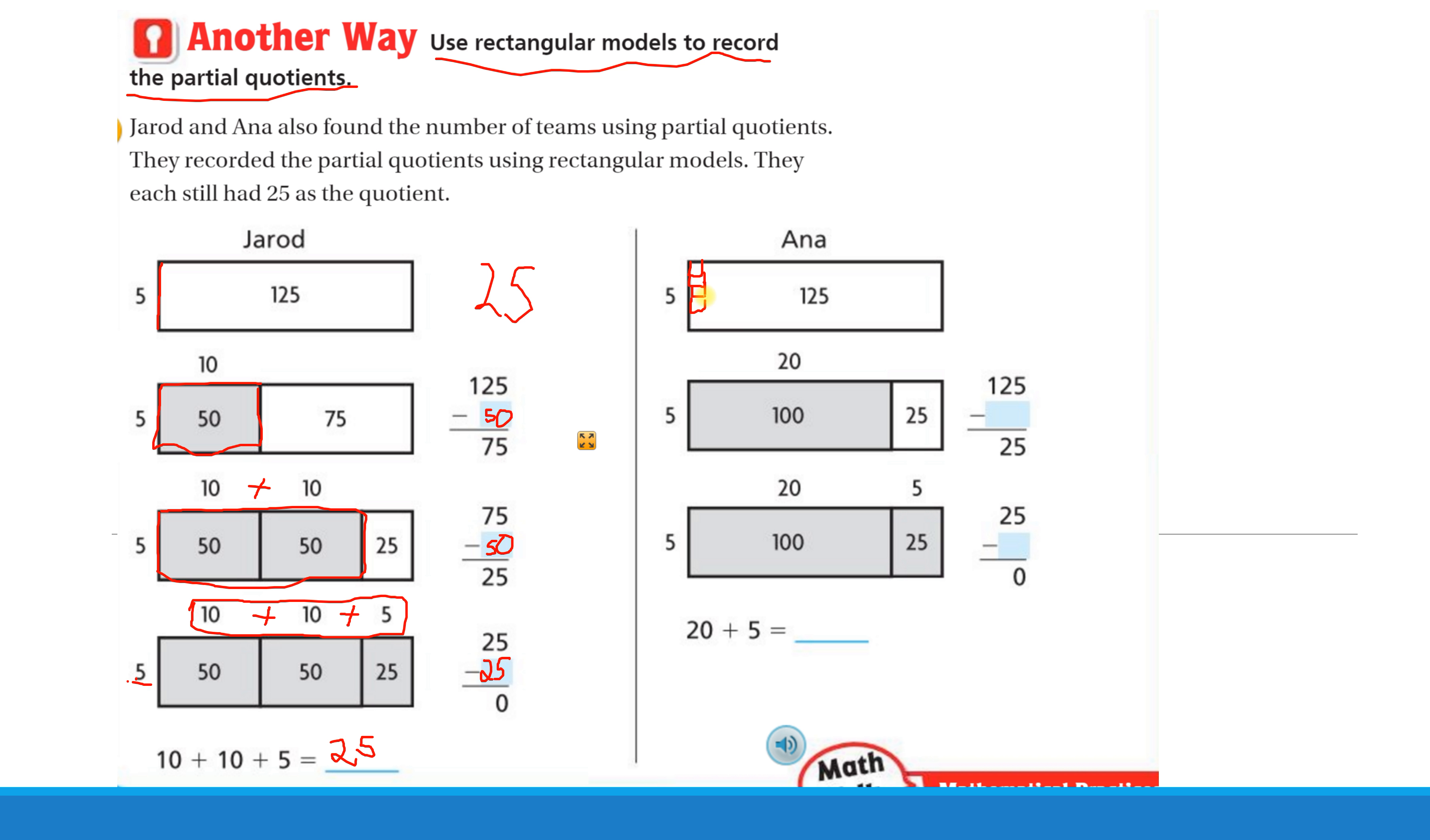She said, okay, I need 5 in each column and I need 5 more columns. 5 times 5 is 25. And she's still at 0. And again, we add the numbers across the top to see how many 5's total. She used 20 of the 5's here and 5 5's here for a quotient of 25.